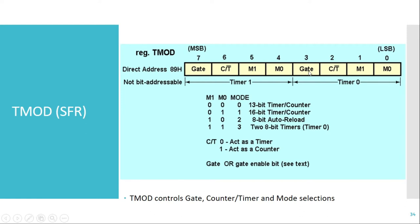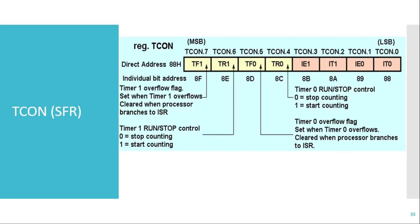Using the upper 4 bits we can configure Timer 1, and using the lower 4 bits we can configure Timer 0. The next SFR is the TCON SFR, which also controls Timer 0 and Timer 1. Its upper 4 bits are related to the timers, while the lower 4 bits are related to external interrupts, which were covered in the previous video.